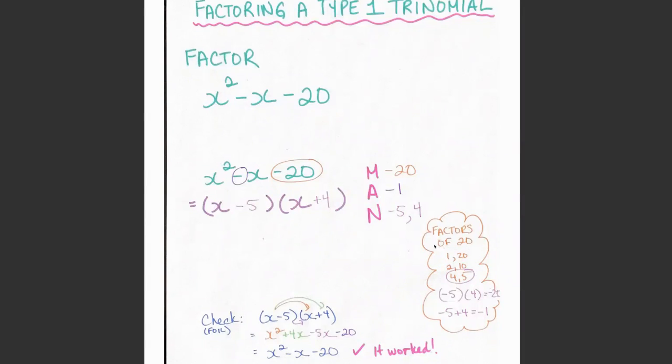Just so that you can see my thought process, if I think about factors of 20, I usually start at 1. So 1 times 20 gives me 20. 2 times 10 gives me 20. 3 doesn't go into 20, so I'm not going to include that one.